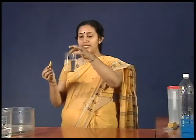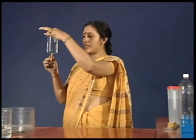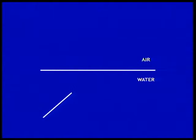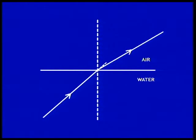But what happens when light moves from water to air? Let's repeat our experiment with the laser torch and water-filled beaker, but this time let us point the light beam through water to air. What do you notice? The light bends away from the normal.